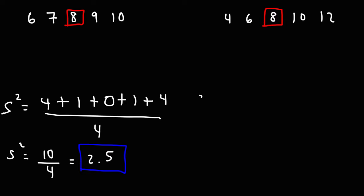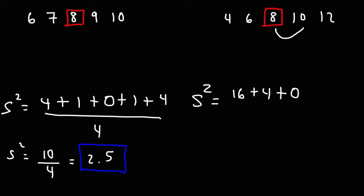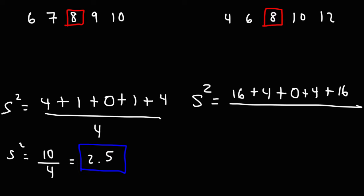Now let's calculate the variance for the second data set. The difference between 4 and 8 is 4; 4 squared gives us 16. The difference between 6 and 8 is 2; 2 squared is 4. The middle number, 8, is the same as the mean, so the difference is 0. The difference between 10 and 8 is 2; 2 squared is 4. The difference between 12 and 8 is 4; 4 squared is 16. So 16 plus 4 plus 0 plus 4 plus 16 equals 40, and 40 divided by 4 gives us 10.